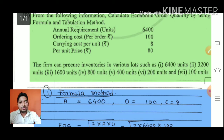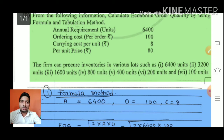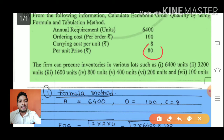Carrying cost is Rs. 8 per unit. You can see on the screen, per unit price is Rs. 80. If the carrying cost is given as a percentage of C, then you calculate the percentage accordingly.